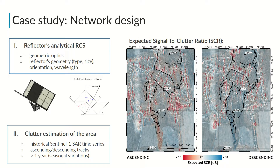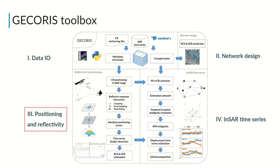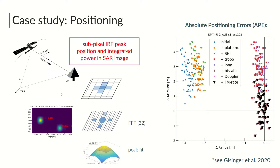Once the reflectors are installed, the second module is used for their precise positioning and reflectivity analysis. We estimate the precise sub-pixel positions and power of the reflectors by FFT oversampling and peak fitting. We also include the known positioning timing corrections, such as datum differences or atmospheric delays, in case one would like to analyze the absolute positioning errors.